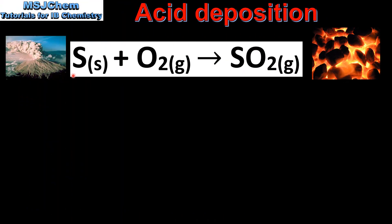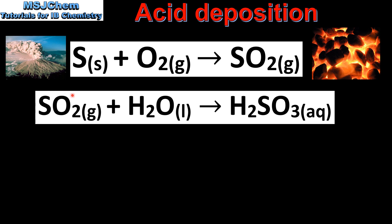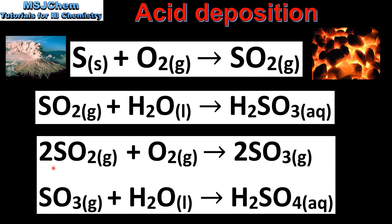Next we look at the equations for the formation of sulfurous and sulfuric acid. In this equation, sulfur reacts with oxygen to form sulfur dioxide. A natural source is volcanoes; a man-made source is the combustion of coal that contains sulfur. The sulfur dioxide can then react with water to form H2SO3, which is sulfurous acid. Alternatively, the sulfur dioxide can react with molecular oxygen to form sulfur trioxide, and the sulfur trioxide can react with water to form sulfuric acid.